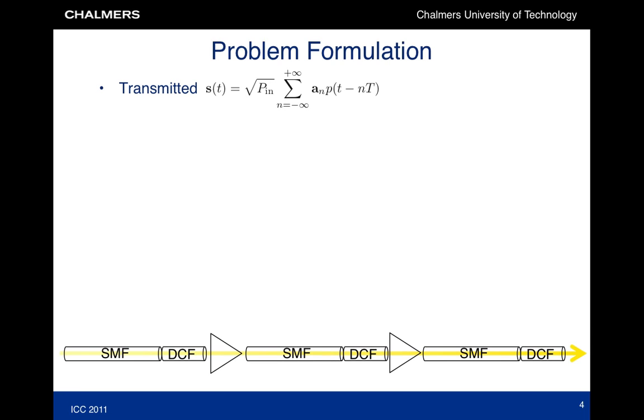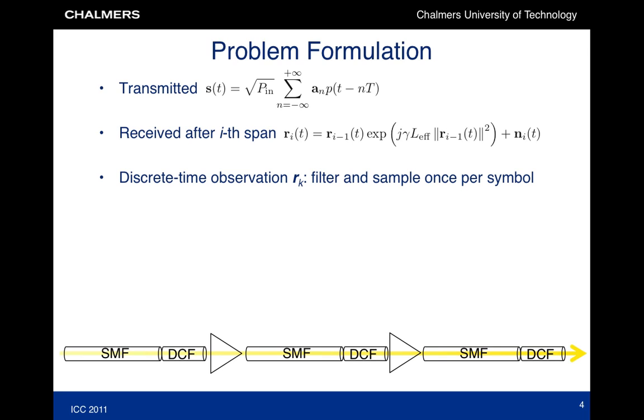More mathematically, we write the transmitted signal s, which is a vector signal if we use two polarizations. The input-output relationship of a single span is now quite simple. At the receiver, we assume the signal is filtered and sampled at baud rate, and our goal is now to recover ak from rk.